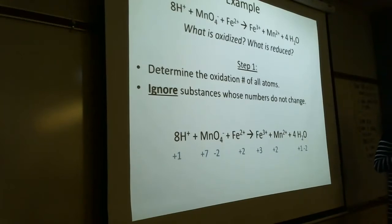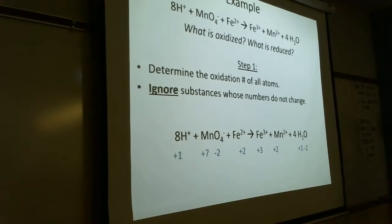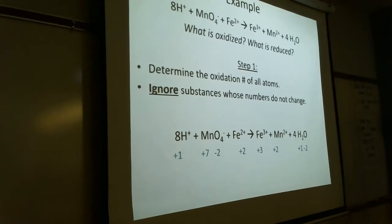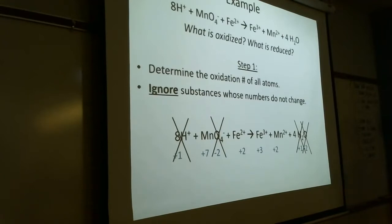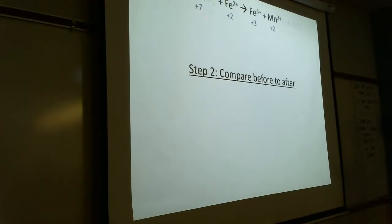Combustion of methane: this is a good review of formulas and equations. Combustion is a reaction with O2. For a hydrocarbon, products are H2O and CO2. CH4 + O2 → CO2 + H2O. Hydrogen is not changing, so we ignore it. Carbon in CH4 goes from -4 to +4 in CO2 — a big jump — carbon is oxidized (reducing agent). Oxygen goes from 0 to -2 — reduced (oxidizing agent).